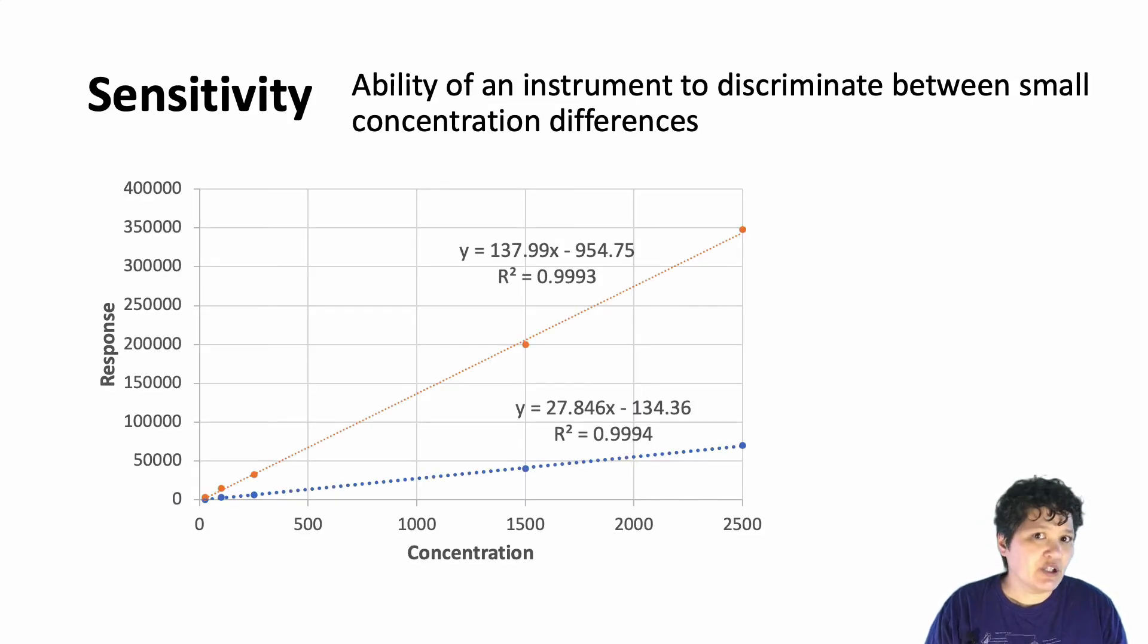One of the things we can determine from looking at a calibration curve is what we call the sensitivity of an instrument. In general, the sensitivity of an instrument is its ability to measure very small differences in concentrations. And the larger the slope of the calibration curve, the more sensitive your instrument is. For example, you can look at these two calibration curves, which were made using the same concentrations. And notice that the difference between trying to measure 88 ppm and 90 ppm would be much more difficult to measure using the blue calibration curve and much easier to measure with the red curve.